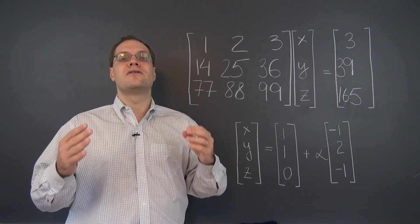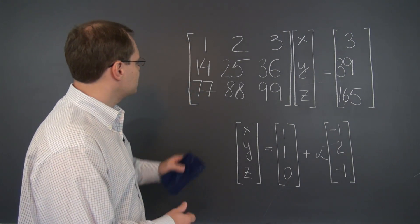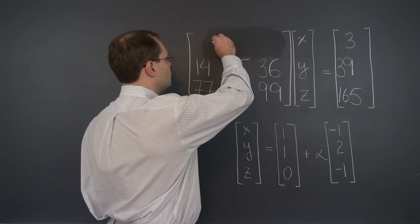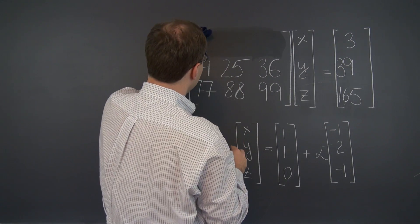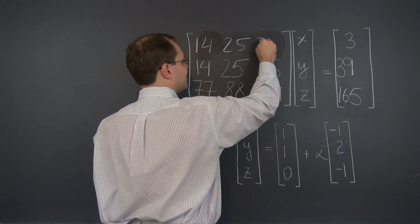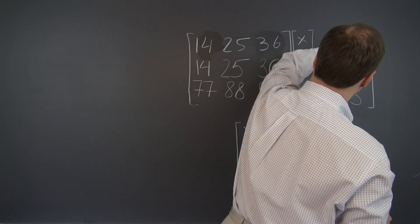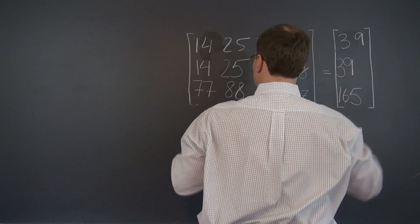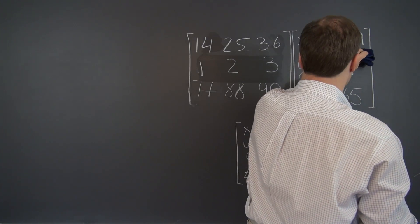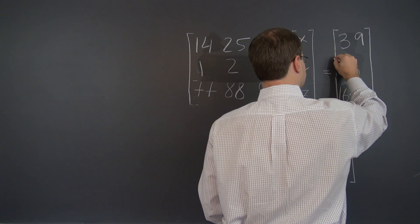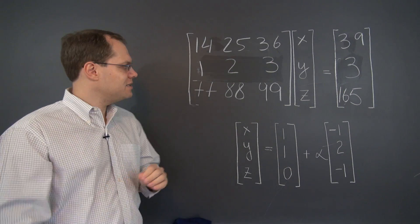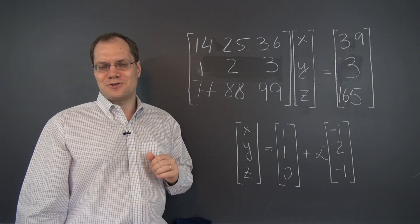What about the last remaining row operation, which is switching rows? Let's switch the first and second rows, leaving us with 14, 25, 36, and 39 in the first row, and 1, 2, 3, and 3 in the second row. This is the last row operation considered part of Gaussian elimination. Let's see if all of the relationships are still preserved. Is the middle column still the average of the other two? Yes, of course it is.